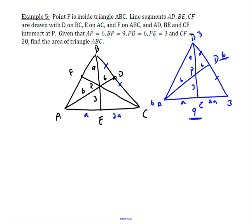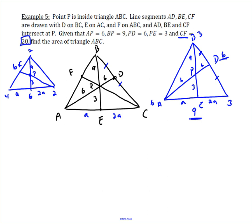From there we can find FP to PC. Drawing that in, we have 9 and 3. If this is A and 2A, we can make this 6 and that 2. Then if we need a 6 here, we let this be 4 and this be 2, which means this has a mass of 6. So if this is P, then FP to FC is going to be 1 to 3. Since CF is 20, we divide 20 by 4, which gives us FP = 5 and PC = 15. Using mass points, we can now figure out what FP and PC are.